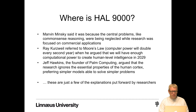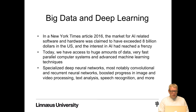Jeff Hawkins, founder of Palm Computing, argued that research ignores the essential properties of the human cortex, preferring simpler models for simpler problems — again, focusing on specific problems rather than recreating general intelligence. These are just a few explanations put forward by researchers. In a New York Times article from 2016, the market for AI-related software and hardware was claimed to have exceeded $8 billion in the US, with interest in AI reaching a frenzy. Today we have access to huge amounts of data, very fast parallel computer systems, and advanced machine learning techniques.